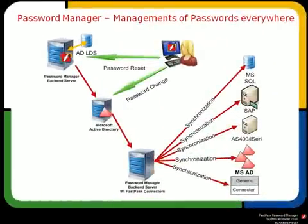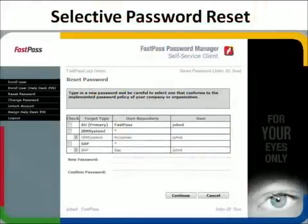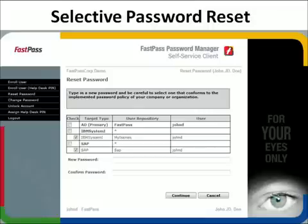FastPass can manage passwords for other platforms using two different approaches. The first is Password Synchronisation, where FastPass synchronises the Active Directory passwords to the defined targets. An interceptor enforces both password changes and resets to be synchronised, without the end-users noticing. The second is Selective Password Reset, where users can even select which target system any password reset applies to.